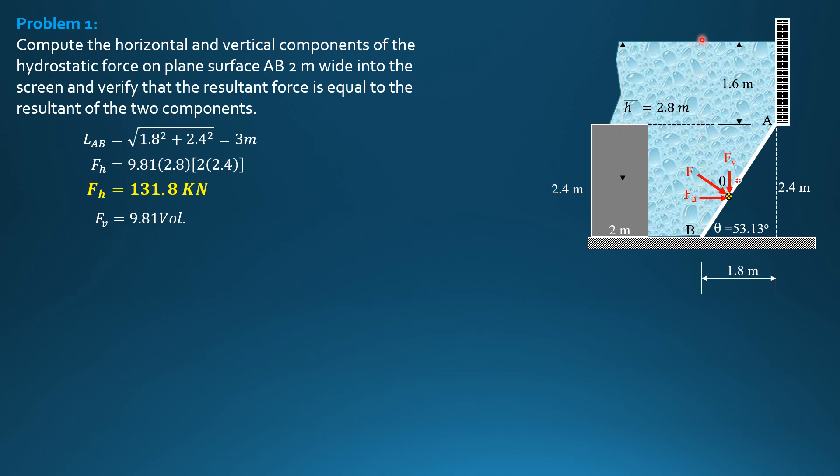And the dimensions of the trapezoid are 1.6 plus 2.4, so this is 2.4 meters, this is 1.6, and the distance between parallel bases is 1.8, and perpendicular to the board 2.